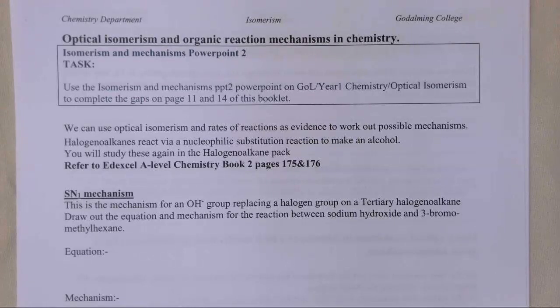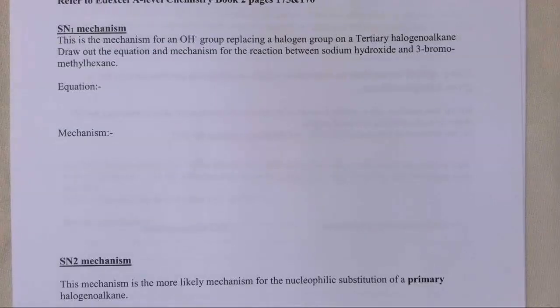I'm going to go ahead and have a look at what we call the SN1 mechanism. This is a mechanism for us replacing an OH group onto a halogenoalkane, so taking off the halogen and replacing it with an OH group. We're going to do the mechanism for this. This is an SN1 mechanism. That means it has one species in the rate determining step. And it usually works with a tertiary halogenoalkane.